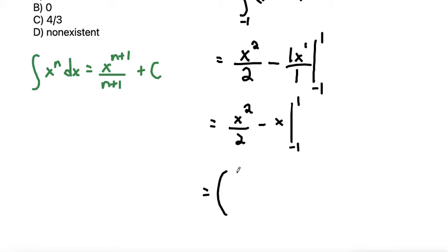and for x, that makes 1 squared is 1 over 2 minus 1, and then we'll plug in, and then we'll subtract plugging in the bottom. So that would be negative 1 squared, which is also 1 over 2 minus negative 1.